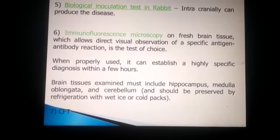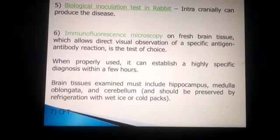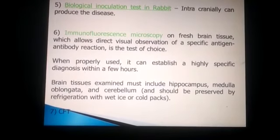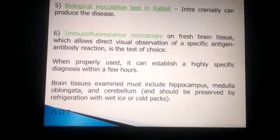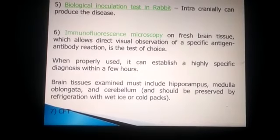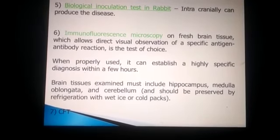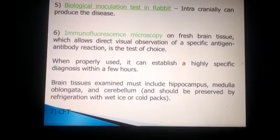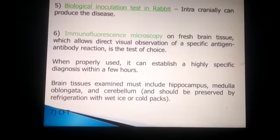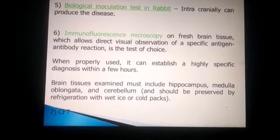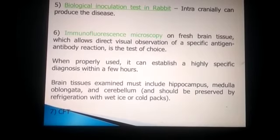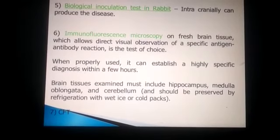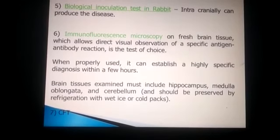Rabies is almost invariably fatal after the appearance of clinical signs, which is why prevention is better than cure. Treatment is not possible once clinical symptoms appear. Vaccination is available in two forms: pre-bite and post-bite.